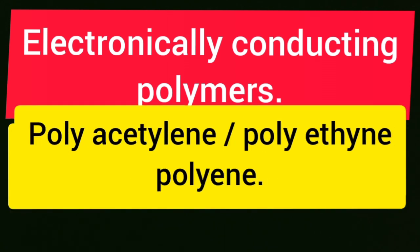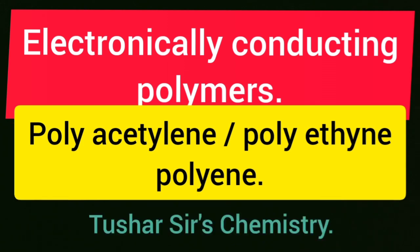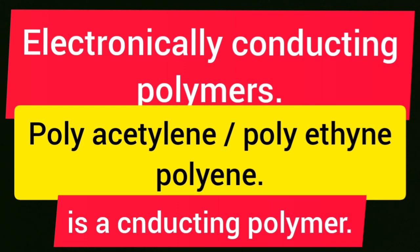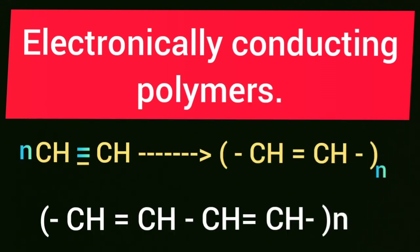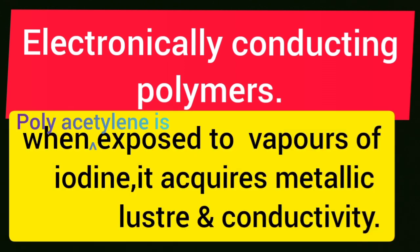Polyacetylene, also called polyethyne or polyene, is a conducting polymer. This polyene contains the monomers as shown on the screen. When polyacetylene is exposed to the vapors of iodine, it acquires metallic luster and conductivity.